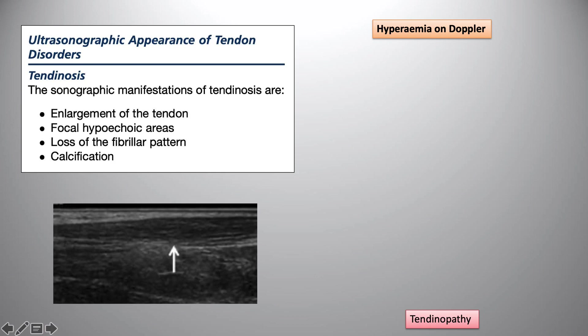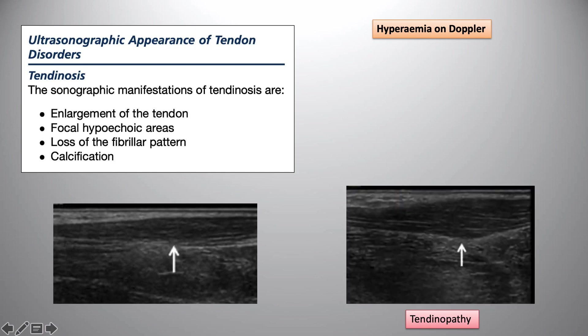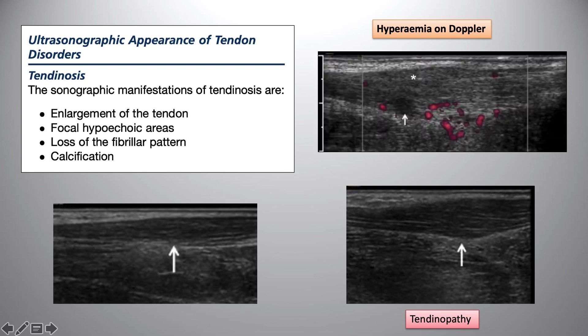From the images shown, you can see enlargement of the tendon and areas of focal hypoechoic regions. Calcification can appear as echogenic reflectors with posterior acoustic shadowing. It's always useful to compare with the contralateral side. Power Doppler is extremely useful — you can see the same tendon showing increased vascularity, which comes under the umbrella of tendinopathy.